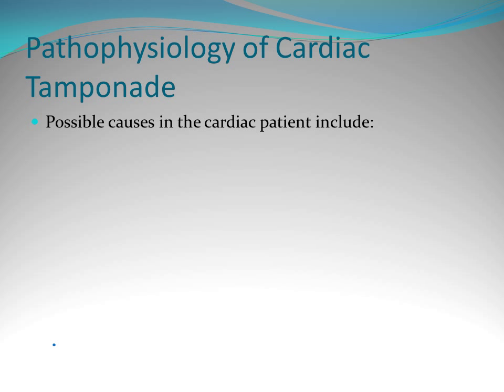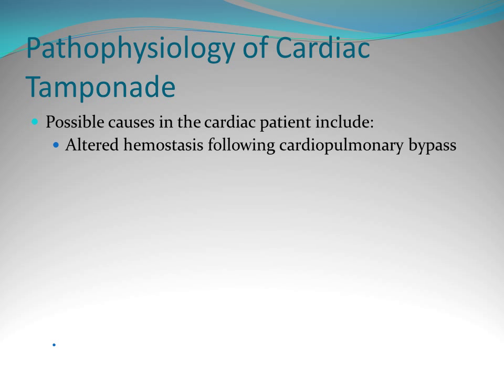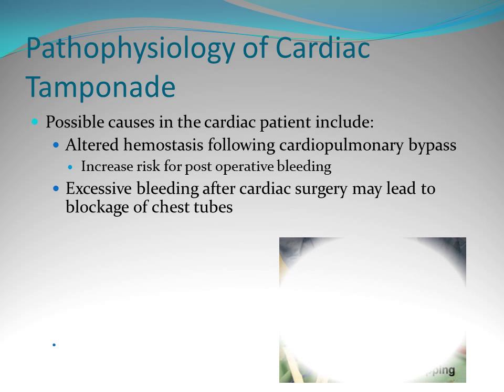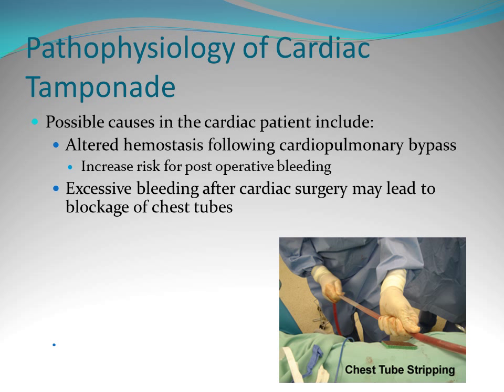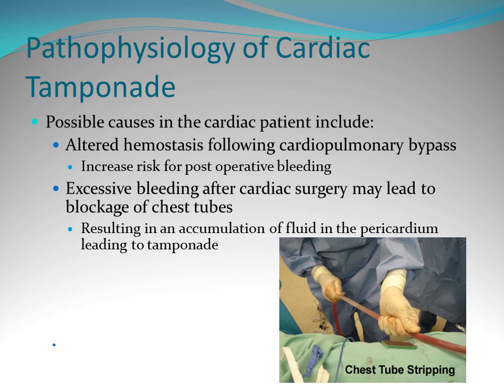Possible causes in the cardiac surgical patient are altered hemostasis following bypass. The cardiopulmonary bypass machine causes changes in your clotting cascade, so you're at increased risk for post-op bleeding. Excessive bleeding after surgery may lead to blockage of the chest tube. We do strip them, as you can see in the picture, which is done routinely after surgery to maintain patency.